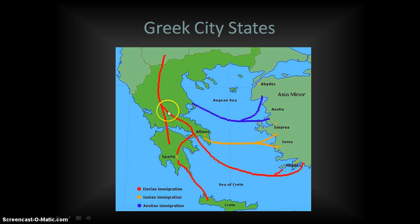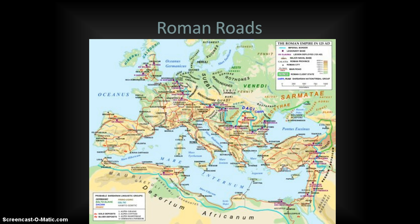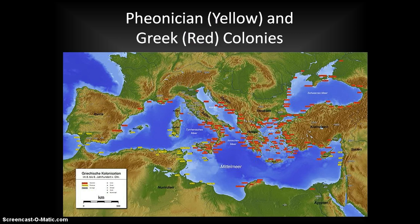Looking at specific examples: Greek city-states existed in Greece and the Anatolian Peninsula, many along trade routes running from Europe into Asia. The Romans were very prominent for the development of their road network — the roads connected the empire, and many cities were established along those trade networks. The Phoenicians were extensive traders who established several cities along the Mediterranean as part of their trade network.